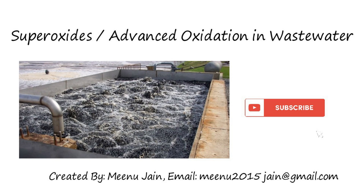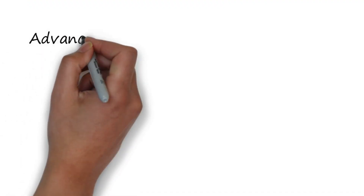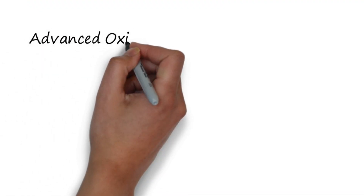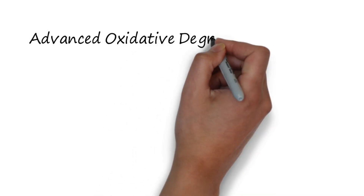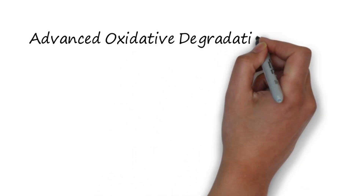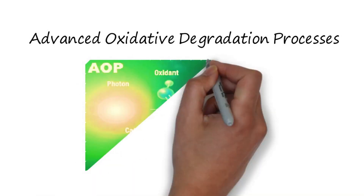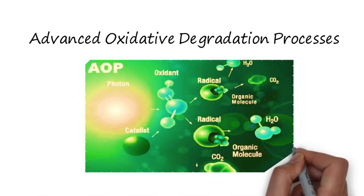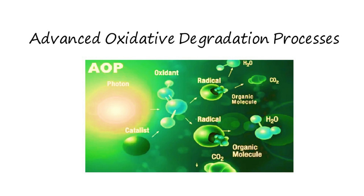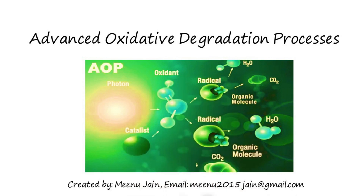Advanced oxidation process is also called the advanced oxidative degradation process. It comprises techniques that, under certain conditions, can transform the vast majority of organic contaminants into carbon dioxide, water, and inorganic ions as a result of oxidation reactions.